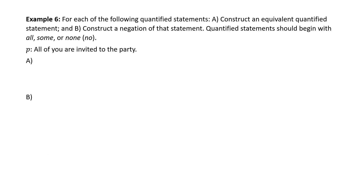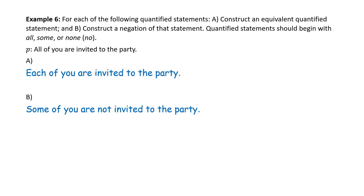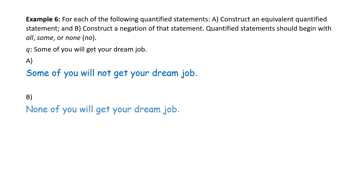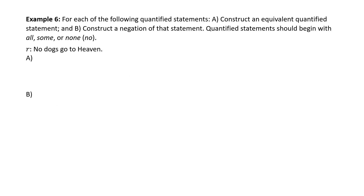For each of the following quantified statements, construct an equivalent quantified statement and a negation. Statement P: 'All of you are invited to the party' — equivalently, 'each of you are invited to the party' — negation: 'some of you are not invited to the party.' Statement Q: 'Some of you will get your dream job' — equivalently, 'some of you will not get your dream job' — negation: 'none of you will get your dream job.' And: 'No dogs go to heaven' — equivalently, 'dogs do not go to heaven' — negation: 'some dogs do go to heaven.'